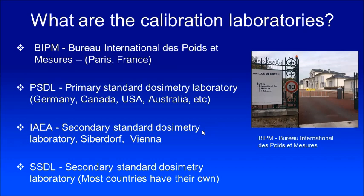Then you have the primary standard laboratory. Most countries have a primary standard laboratory — for example Germany, Canada, USA, Australia — where they have their primary standard laboratory for radiation dosimetry. Then you have secondary standard dosimetry laboratories. Countries like India, Bangladesh, and several others have a secondary standard dosimetry laboratory.